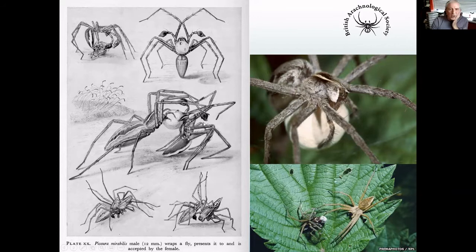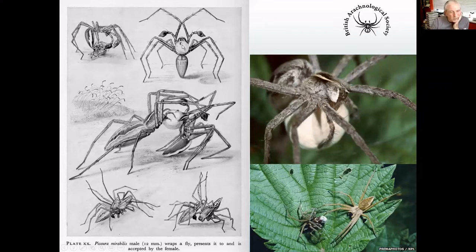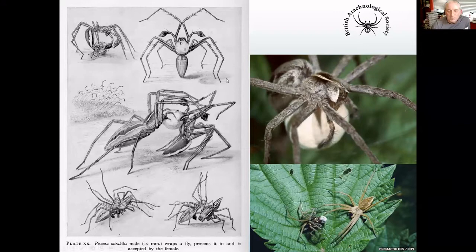The nursery web spider is fascinating not just because it's beautiful and big, but also because of its courtship display, which has been studied for many years. The male presents the female with what is supposed to be a parcel of food wrapped up for her, and while she's distracted with that, he mates with her. Research has shown that sometimes he wraps up a bit of dirt or sometimes nothing at all — there's quite a lot of research into the ecological economics of deception that has been conducted on these spiders.